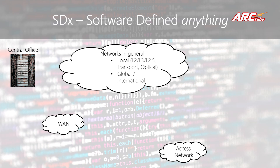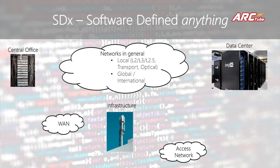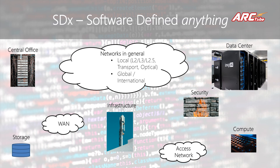Then we have different infrastructure: fiber infrastructure, wireless infrastructure, towers, etc. In a typical telco environment you also have data centers where both network data and customer data and different other data types are stored. Then we have compute or computers, mainly associated with data centers, and storages to store different types of data. We also have security, for example firewalls, to implement security for both networks and data centers. And we have different types of wireless networks, which can also be identified separately from access networks.